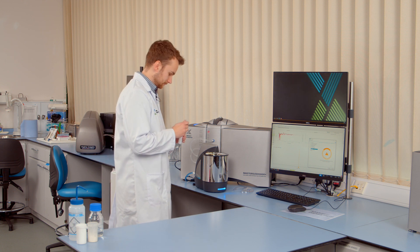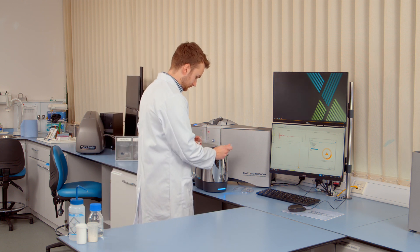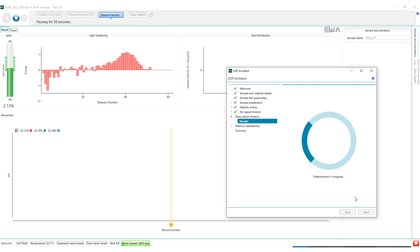So I'm now going to add the sample into the dispersion unit aiming for a target obscuration value of between two and three percent to begin the obscuration titration. So now that we've reached our target obscuration value it will now stabilize for 30 seconds before carrying out six repeat measurements.